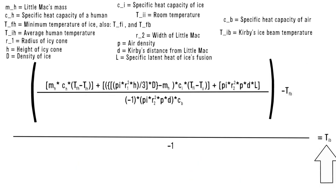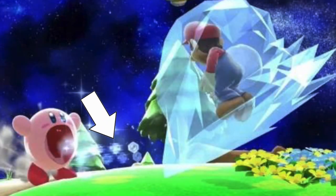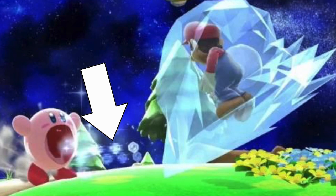And finally, T sub IB is the temperature of the icy beam being shot from Kirby. And that is what we need to find out.